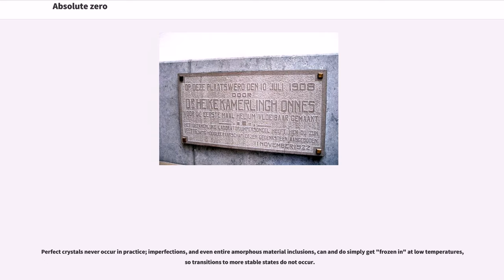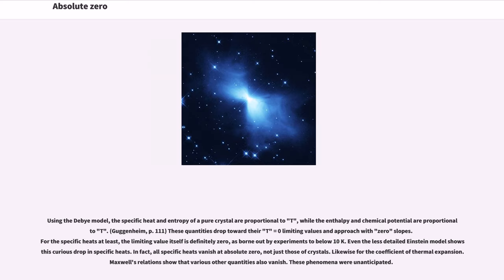Perfect crystals never occur in practice; imperfections, and even entire amorphous material inclusions, can and do simply get frozen in at low temperatures, so transitions to more stable states do not occur. Using the Debye model, the specific heat and entropy of a pure crystal are proportional to T cubed, while the enthalpy and chemical potential are proportional to T to the fourth. These quantities drop toward their T equals zero limiting values and approach with zero slopes. For the specific heats at least, the limiting value itself is definitely zero, as borne out by experiments to below 10 Kelvin. Even the less detailed Einstein model shows this curious drop in specific heats.